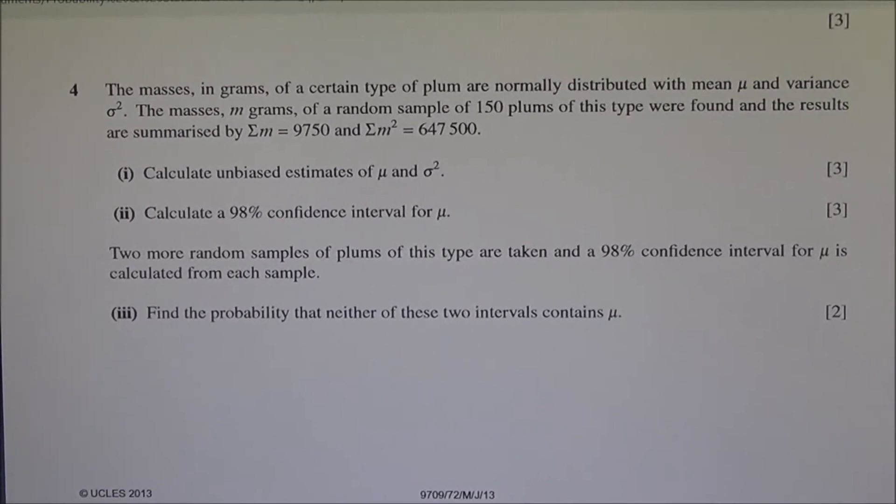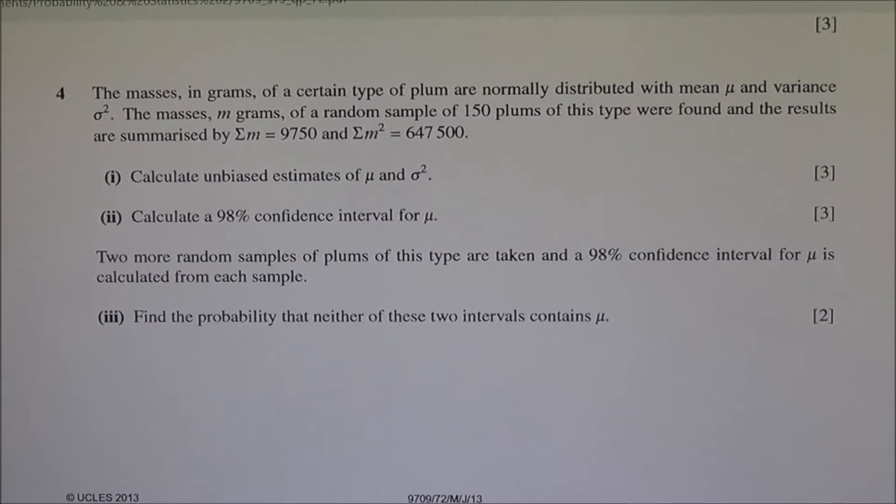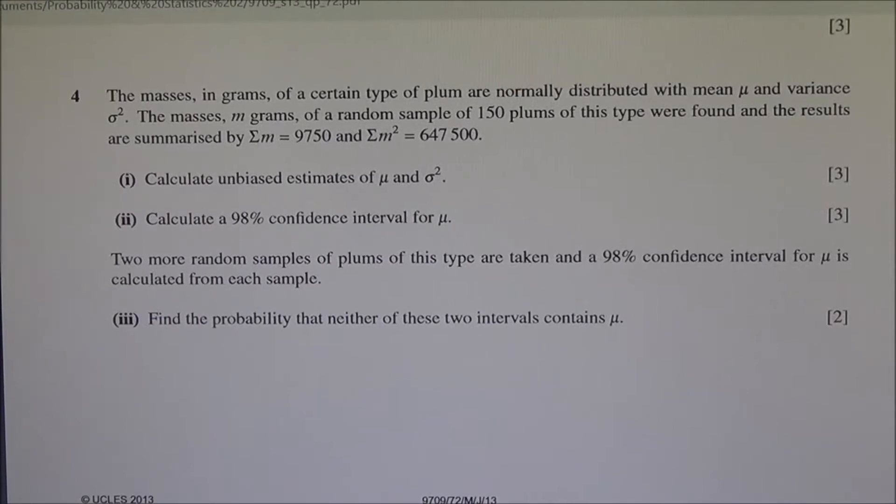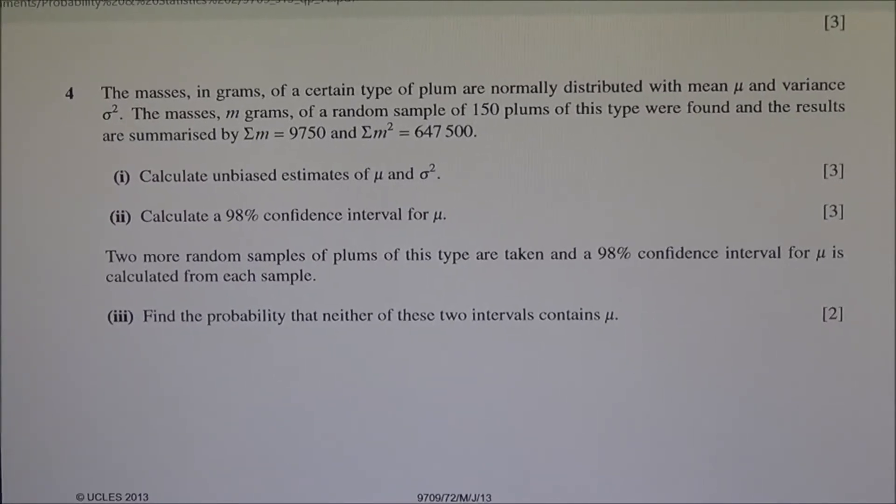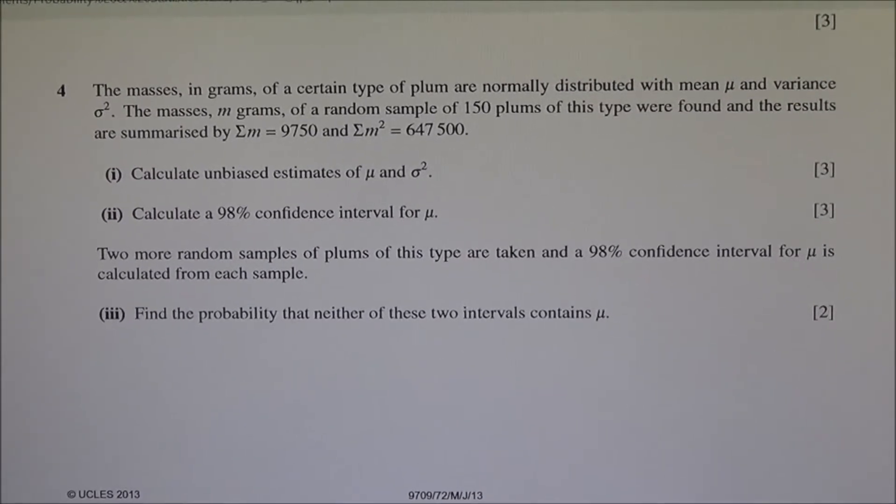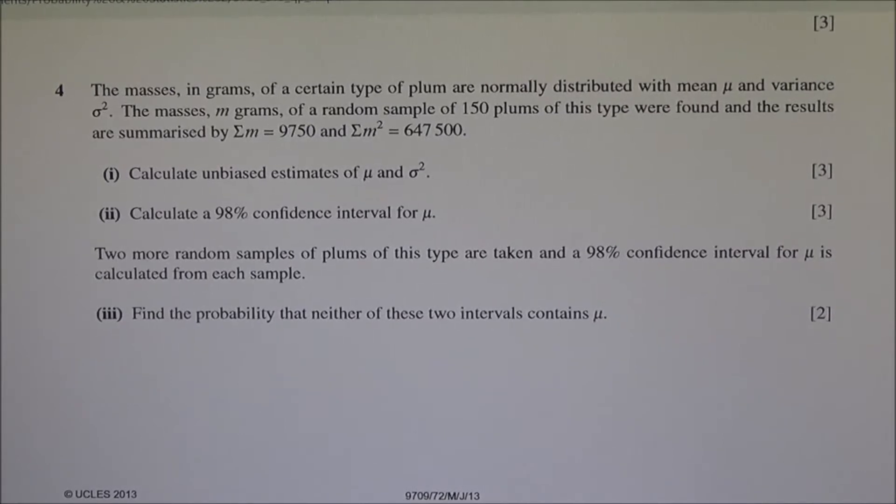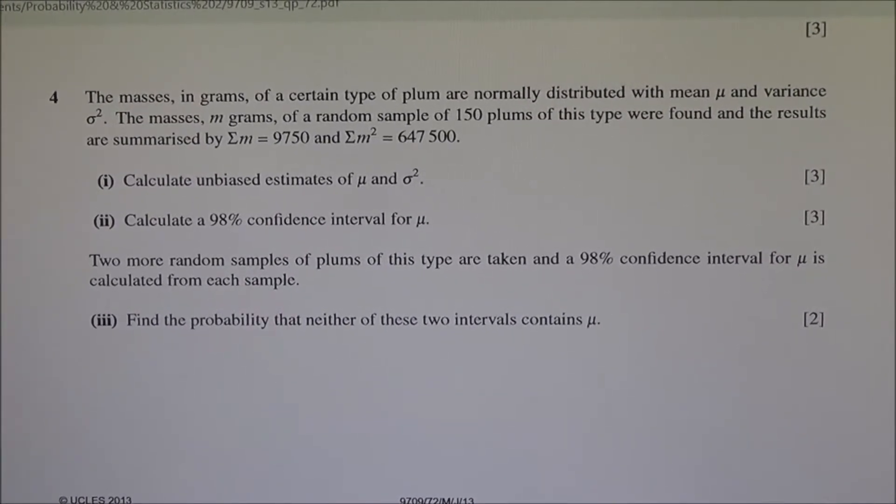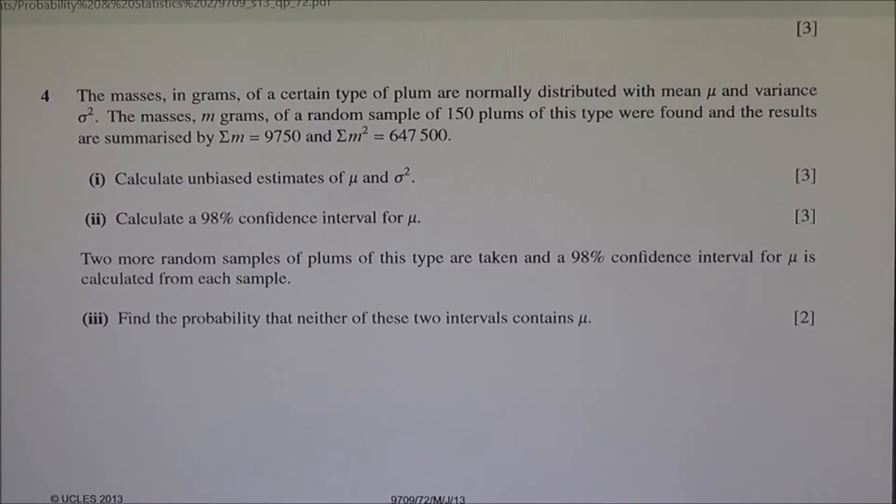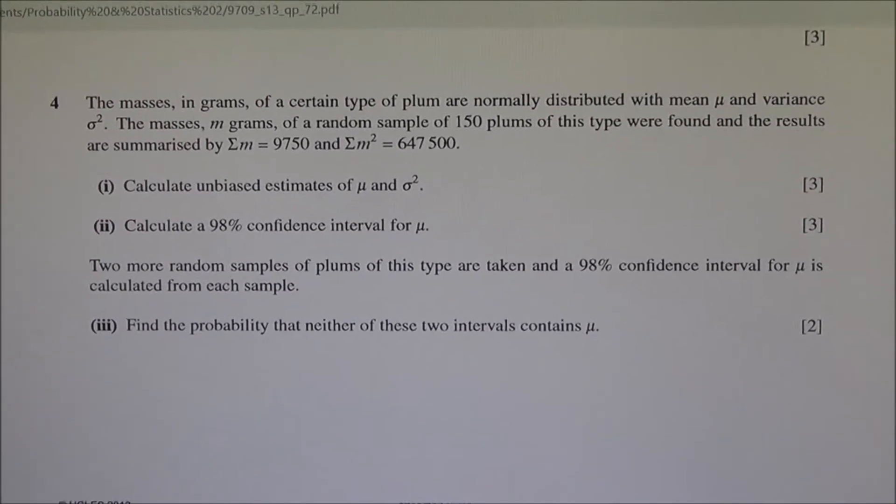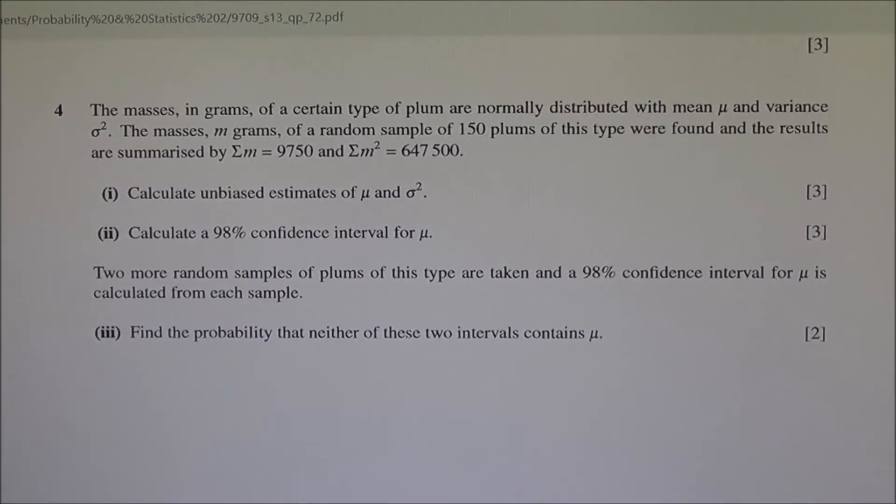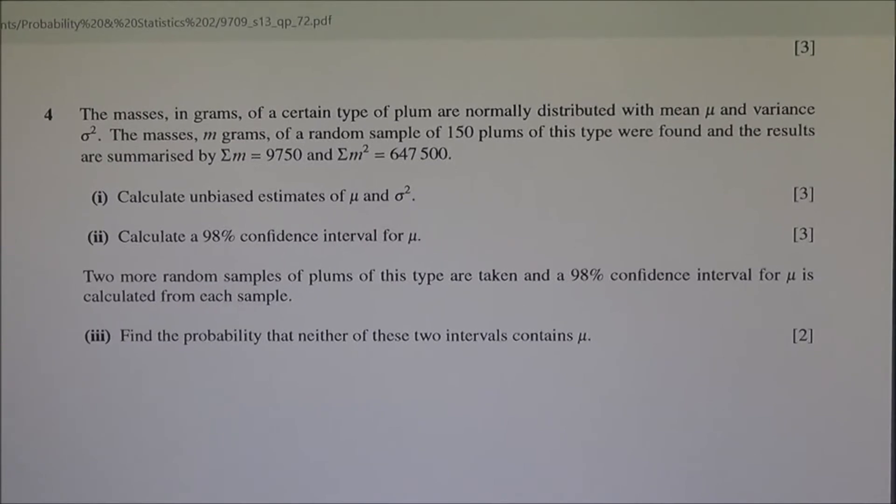For the first part, calculate unbiased estimates of the population mean and standard deviation. Second part, calculate a 98% confidence interval for mu. Two more random samples of plums of this type are taken and a 98% confidence interval for mu is calculated for each sample. Find the probability that neither of these two intervals contains mu.